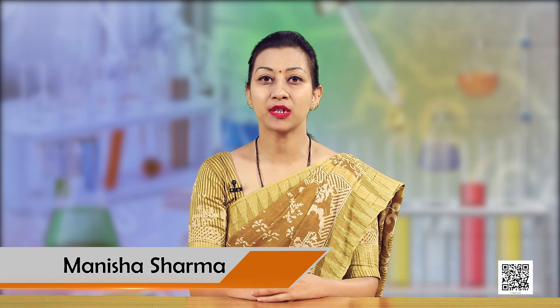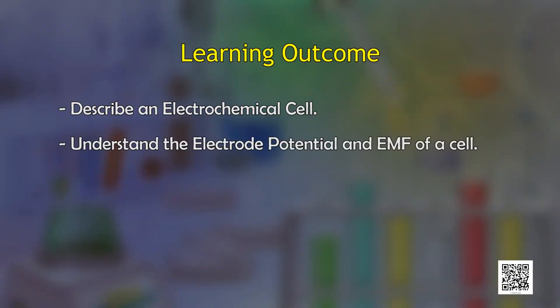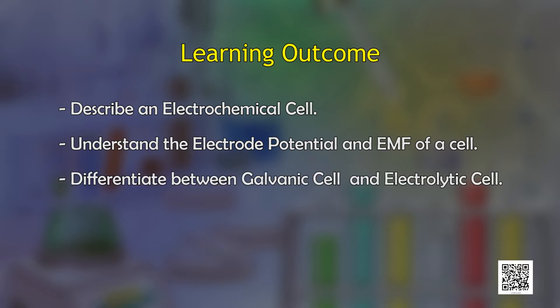Dear learners, today we are going to discuss about the chapter electrochemistry. You would be able to describe an electrochemical cell, understand the electrode potential and EMF of a cell, and differentiate between galvanic and electrolytic cells after today's discussion.